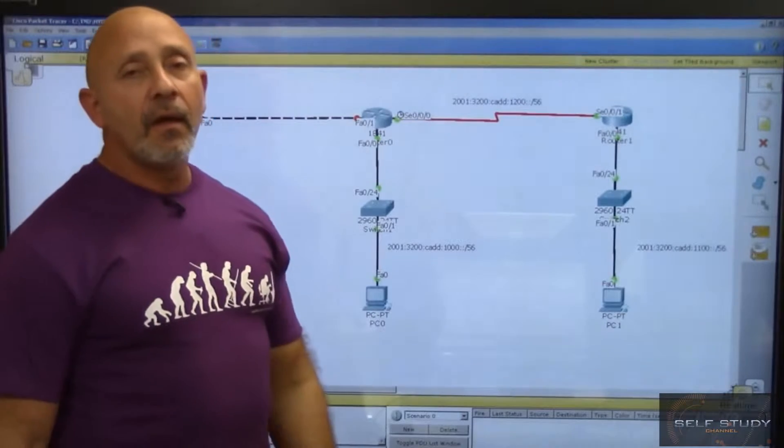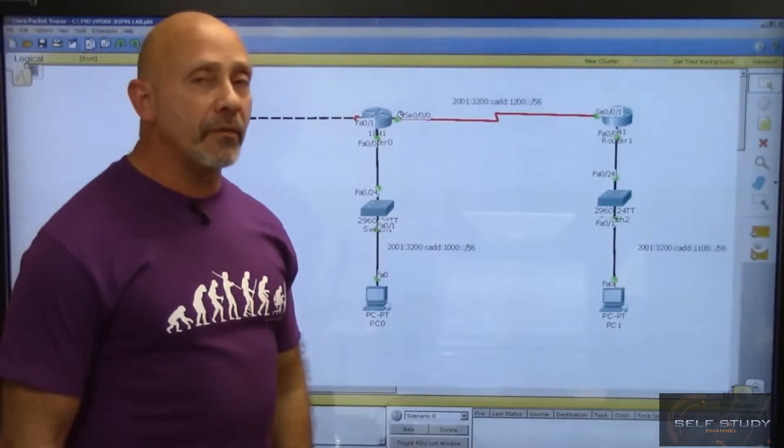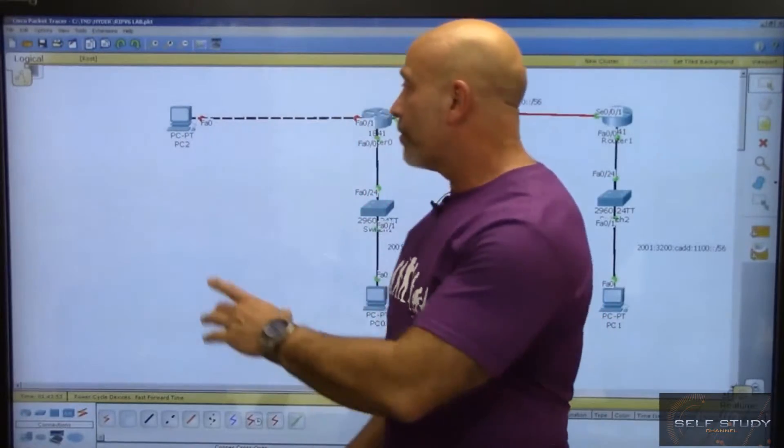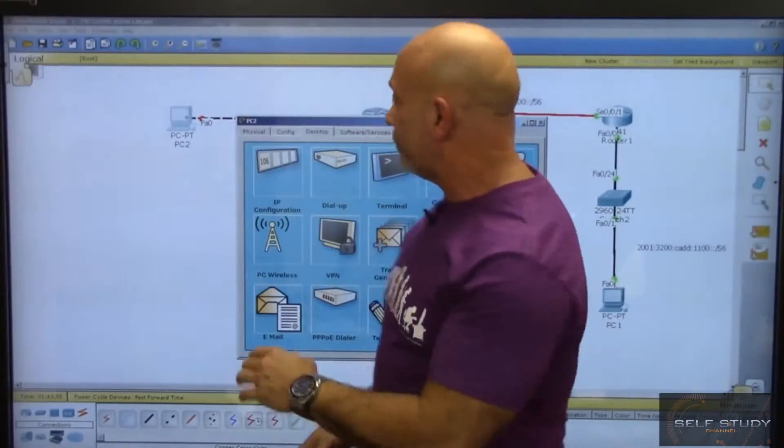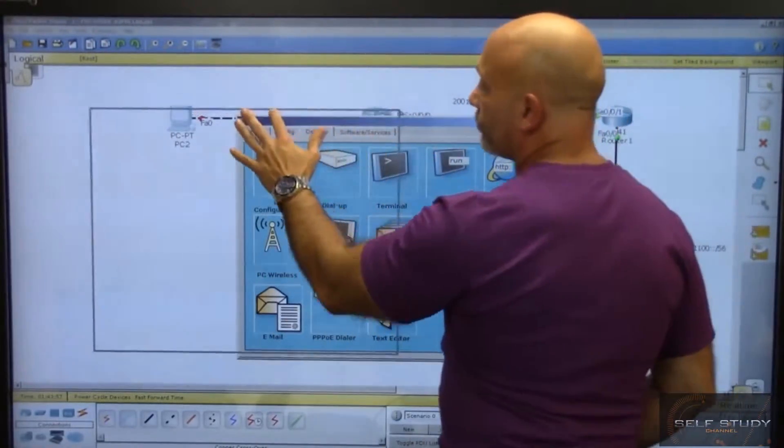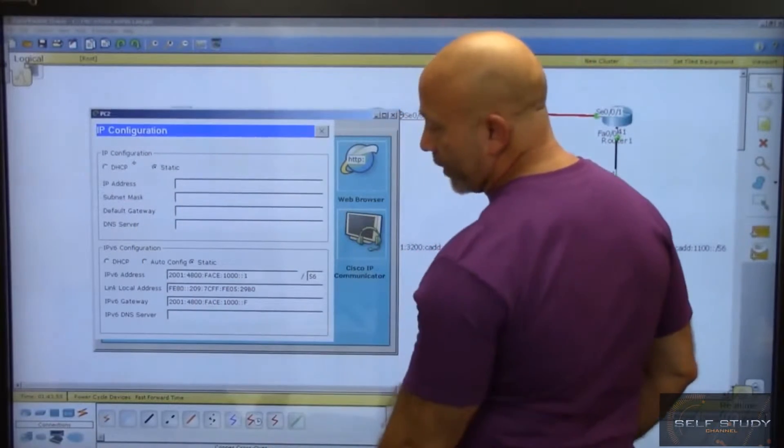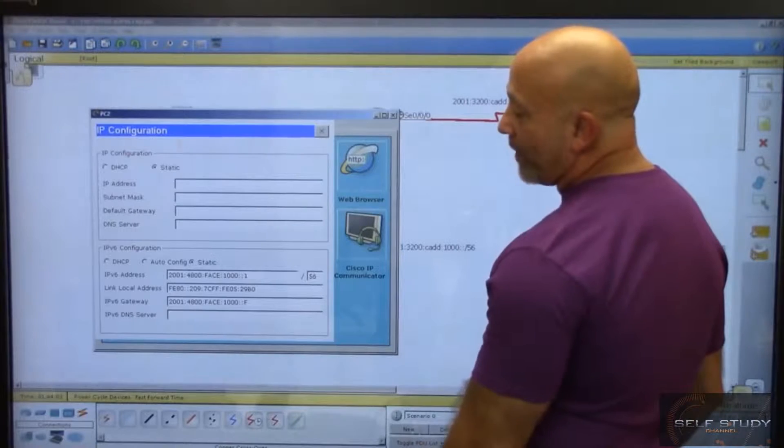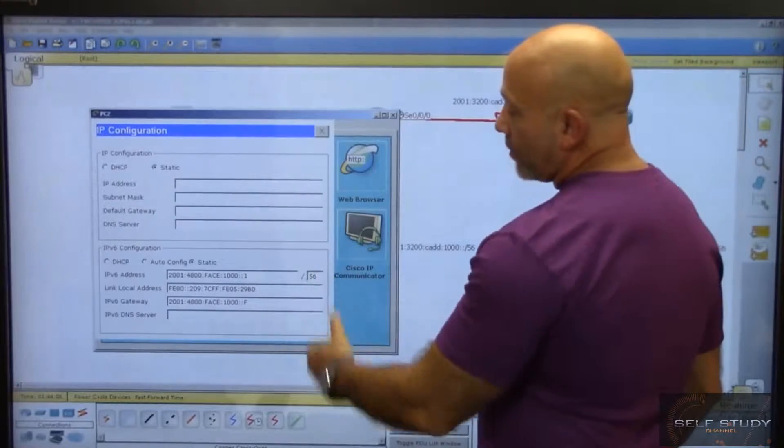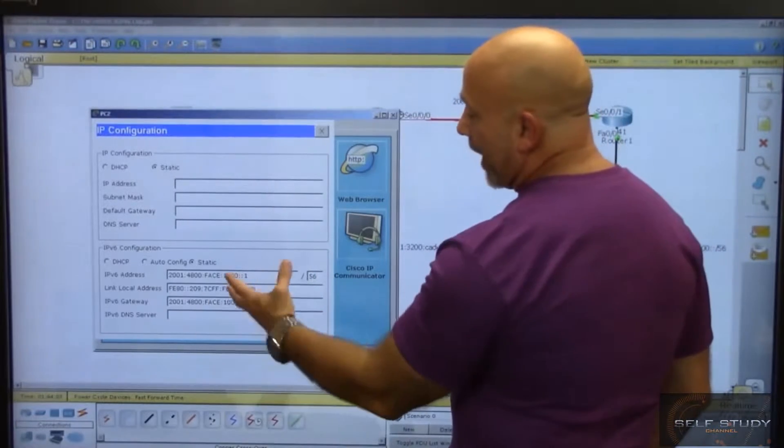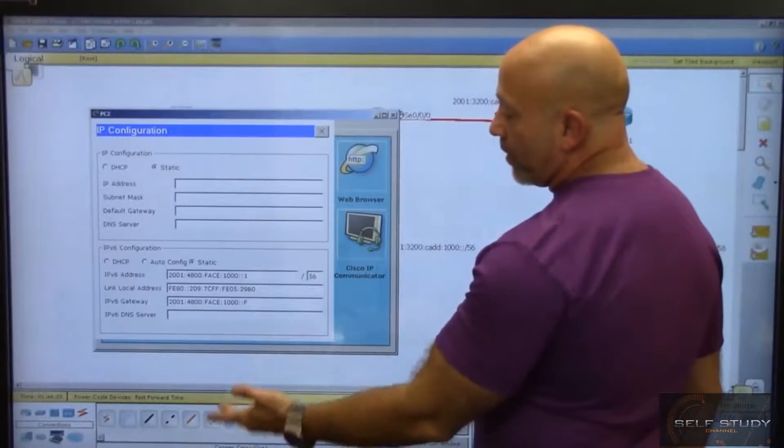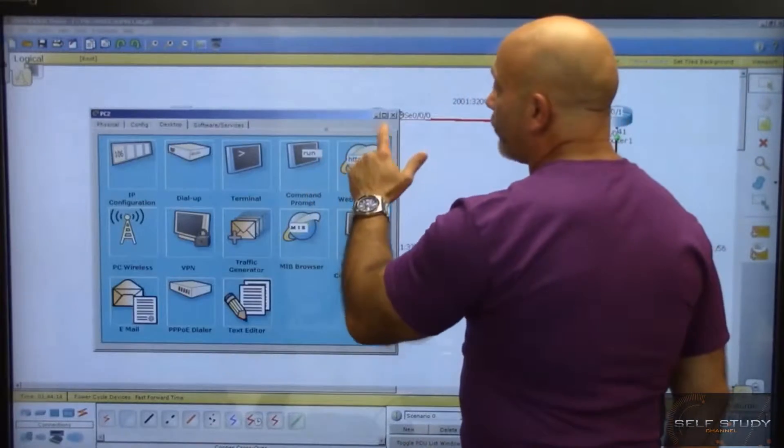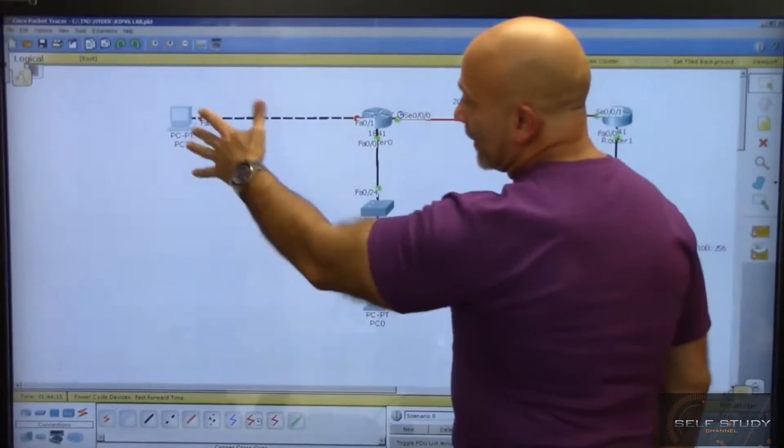What I did is I went inside this PC and went into the IP configuration and used 2001:4800:FACE:1000::1 with a /56, and then the gateway is 2001:4800:FACE:1000::F. I assigned it there statically, but what I'm going to do is actually go into this router under that particular interface and assign the auto-configuration so you can see how it assigns the end of that particular address.